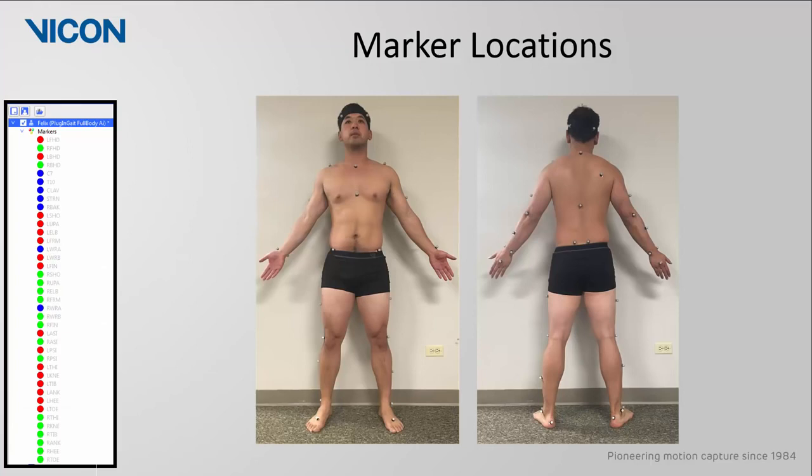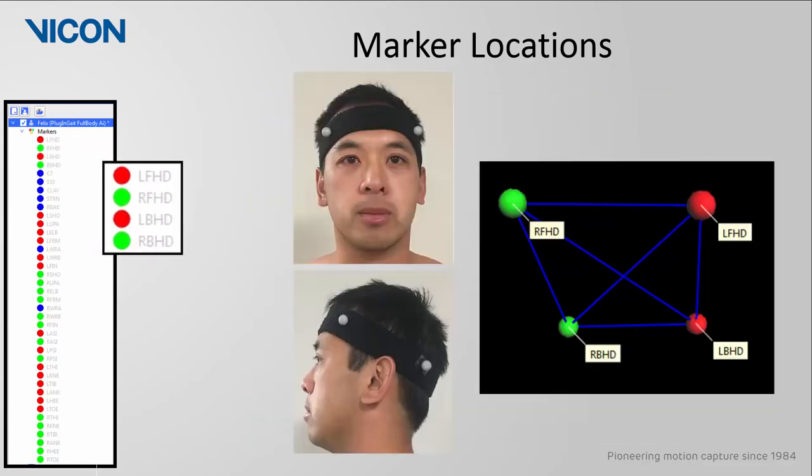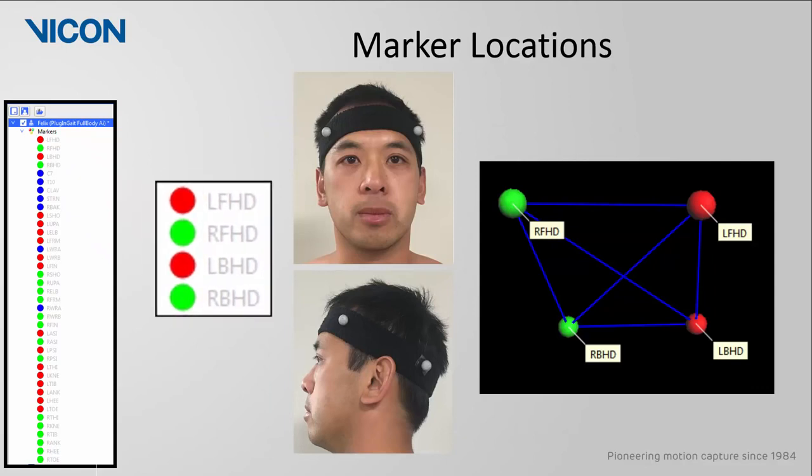Now let's outline the markers that comprise this template and discuss the appropriate placement of these markers on the body. We will go through this marker list in segments. The first four markers are on the head. The left and right front head need to be placed at the temple. With the head in the anatomical position these markers will help to define the transverse plane. If these posterior markers on the head cannot be placed level we can account for this when running the model.